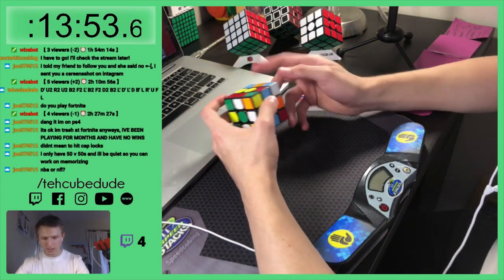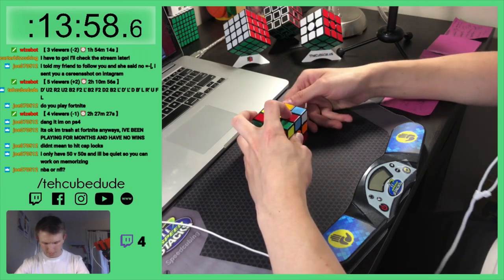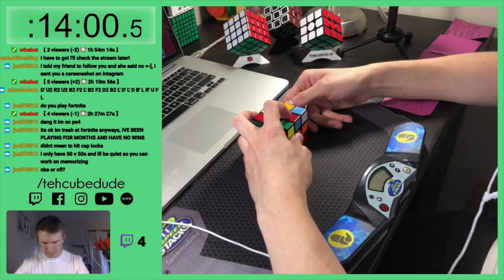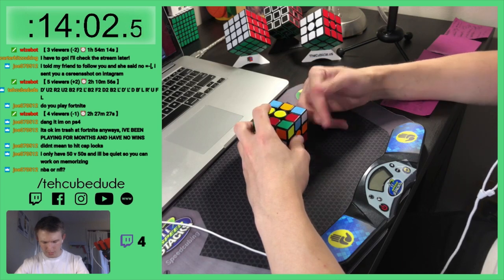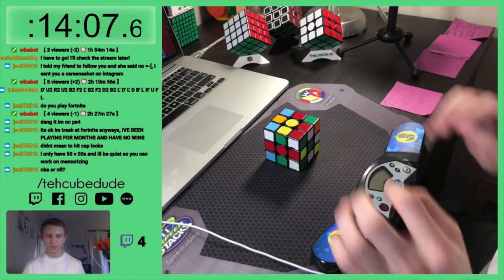R U2 R prime R, U R prime U R U2 R prime. Okay, I'm done, I'm done with memo.